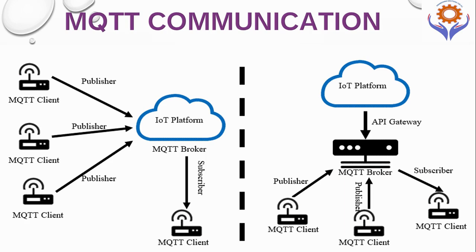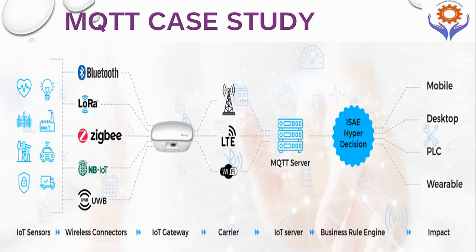In another case study, the IIoT sensor or IoT sensor connects through a wireless connector. The IoT gateway collects the data and sends it through the carrier — either through radio communication, GPRS, or Wi-Fi technology — to the IIoT server, that is the MQTT server, which then transmits to the MQTT clients.